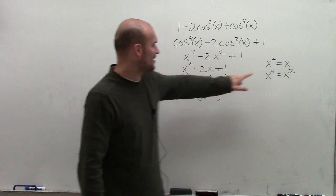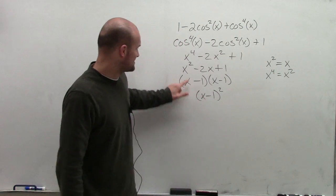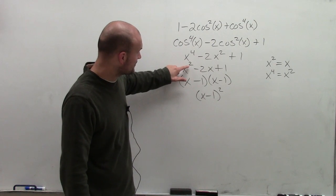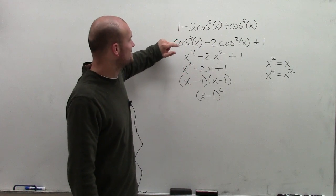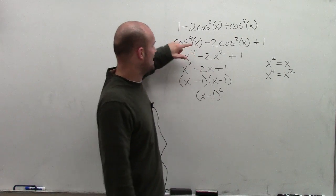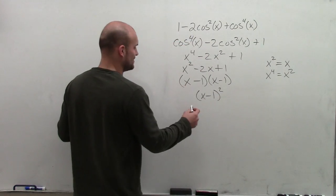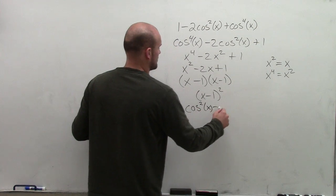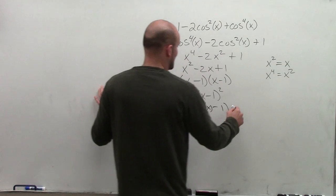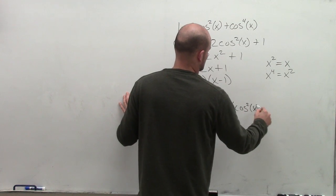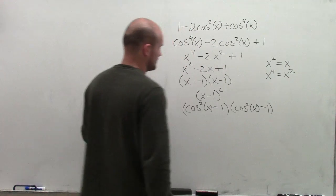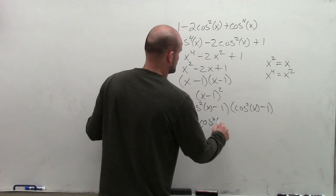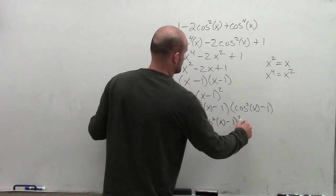Our x's are equal to my x squareds, which are now going to be equal to my x to the fourths. So therefore, what I can rewrite this is saying cosine squared of x minus 1 times cosine squared of x minus 1. And therefore, you can rewrite this as cosine squared of x minus 1 squared.